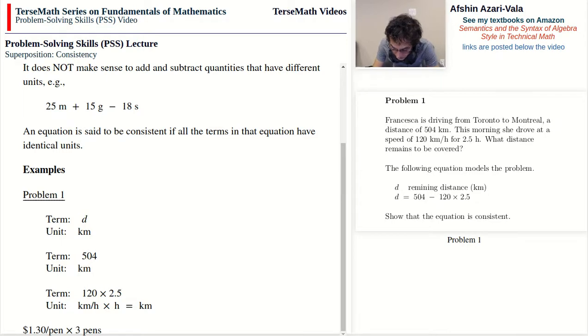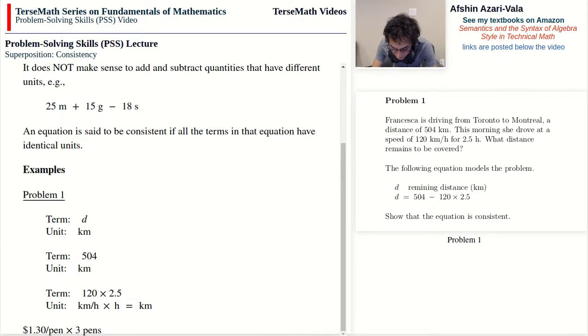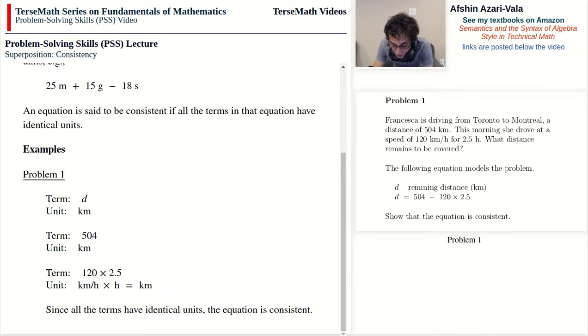Okay, let me get rid of this. All right. So now that we know that all the terms have the same unit, identical units—kilometers, kilometers, and kilometers—then we can claim that the equation is consistent.